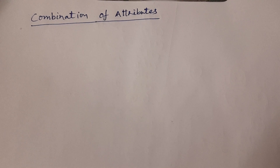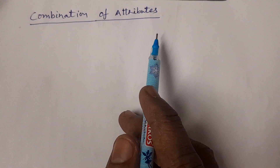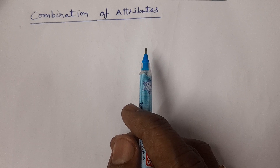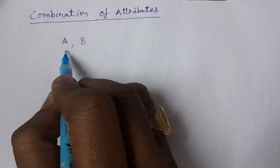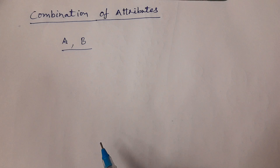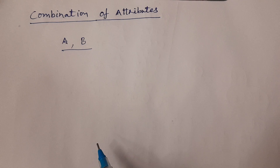Welcome to BSc Statistics students. In this class I explain combination of attributes — for example, you have two attributes A and B. What would be the combination of attributes, without missing any kind of attribute? How to write the combination of attributes — this is what I explain in this class.